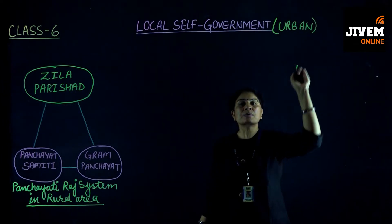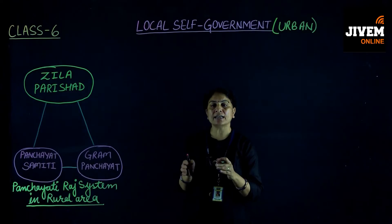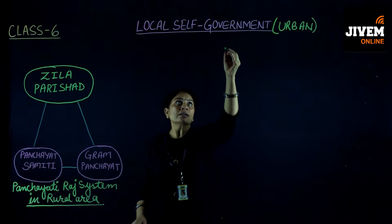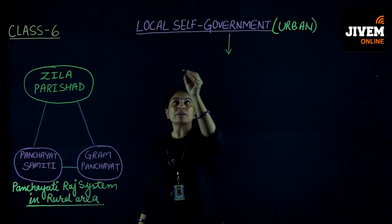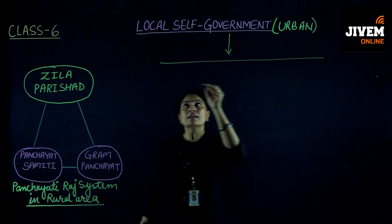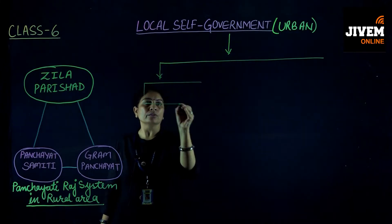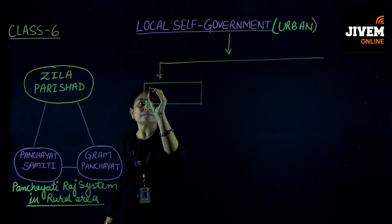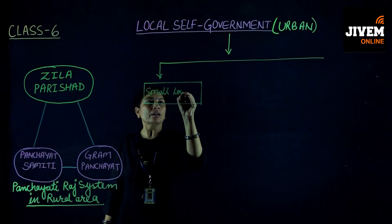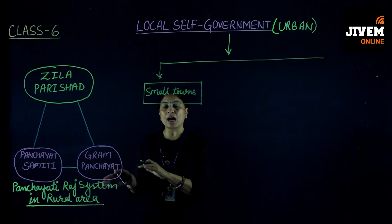Dear students, first we will categorize urban areas — what is called an urban area and which areas are considered urban. We will categorize this in a very easy way using a flowchart. The first category is small towns.